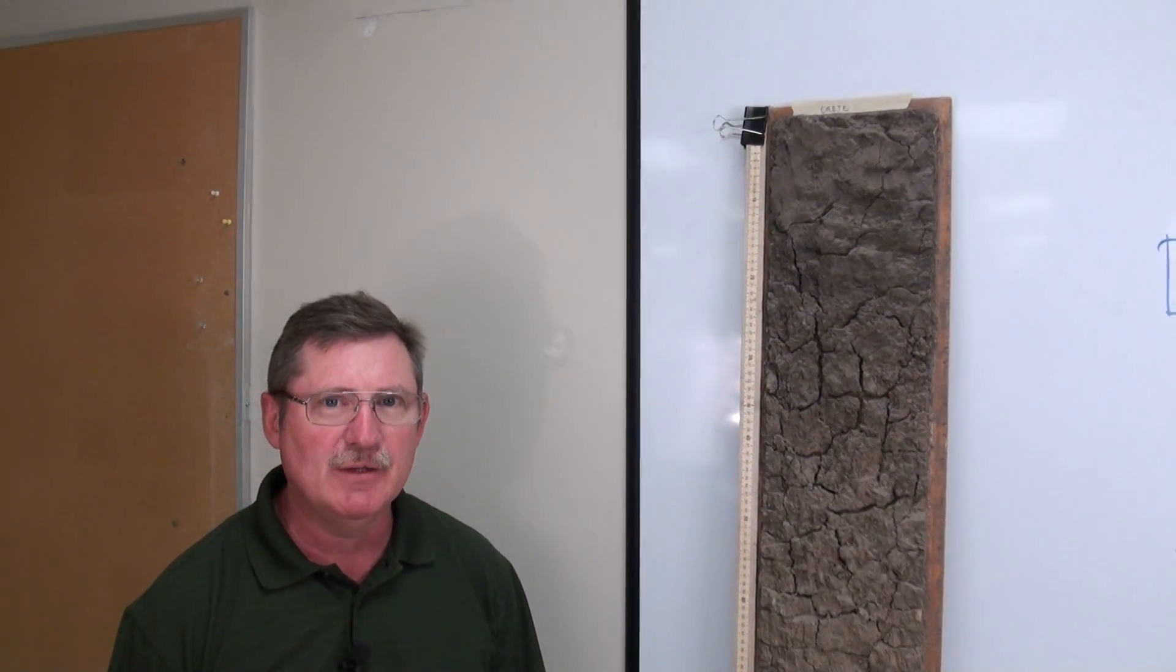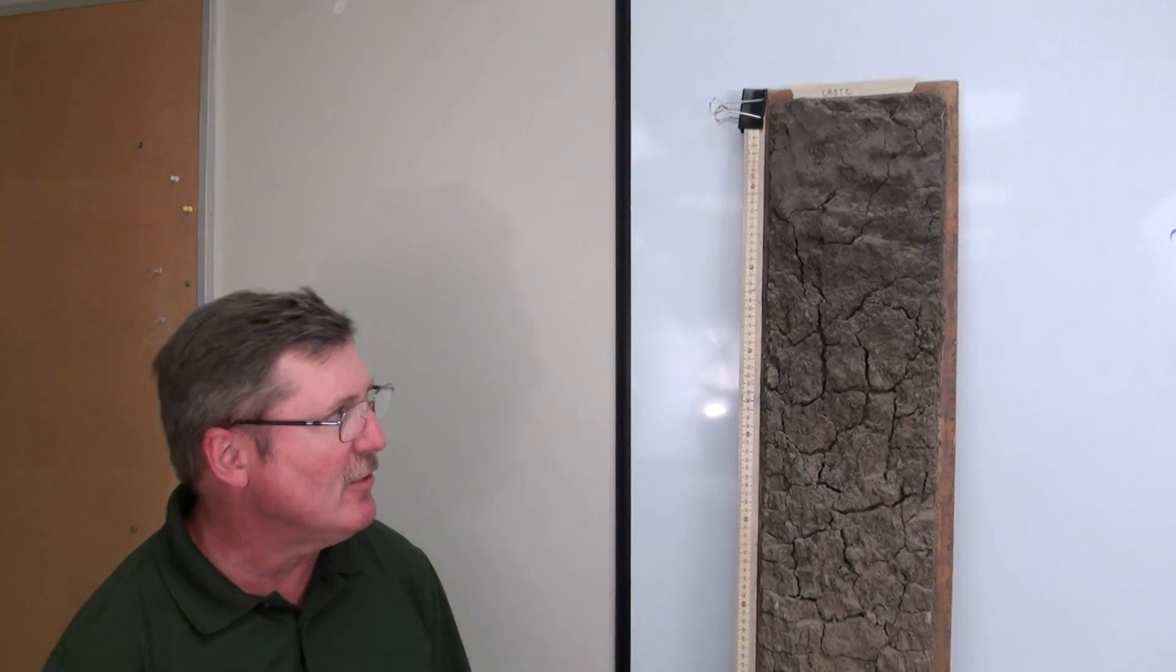We're going to describe the Crete soil profile in terms of the layers of soil present, and maybe we'll be able to identify the horizons present within the Crete soil profile. We're going to look for differences in color and consistency that indicate where those boundaries might be. Let's move into the soil core.